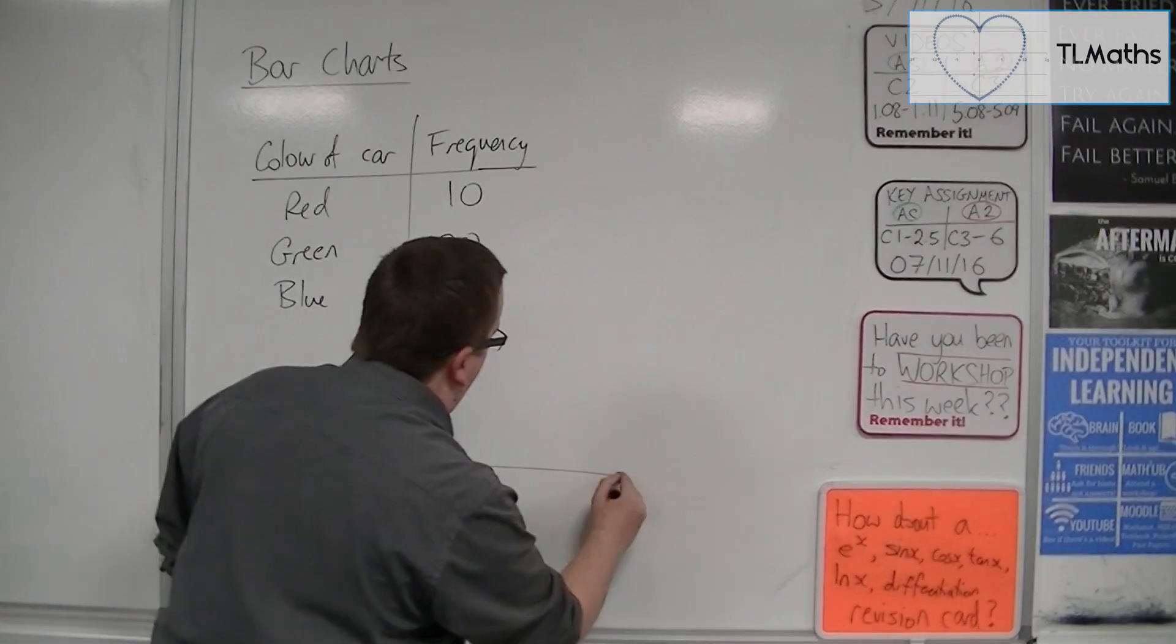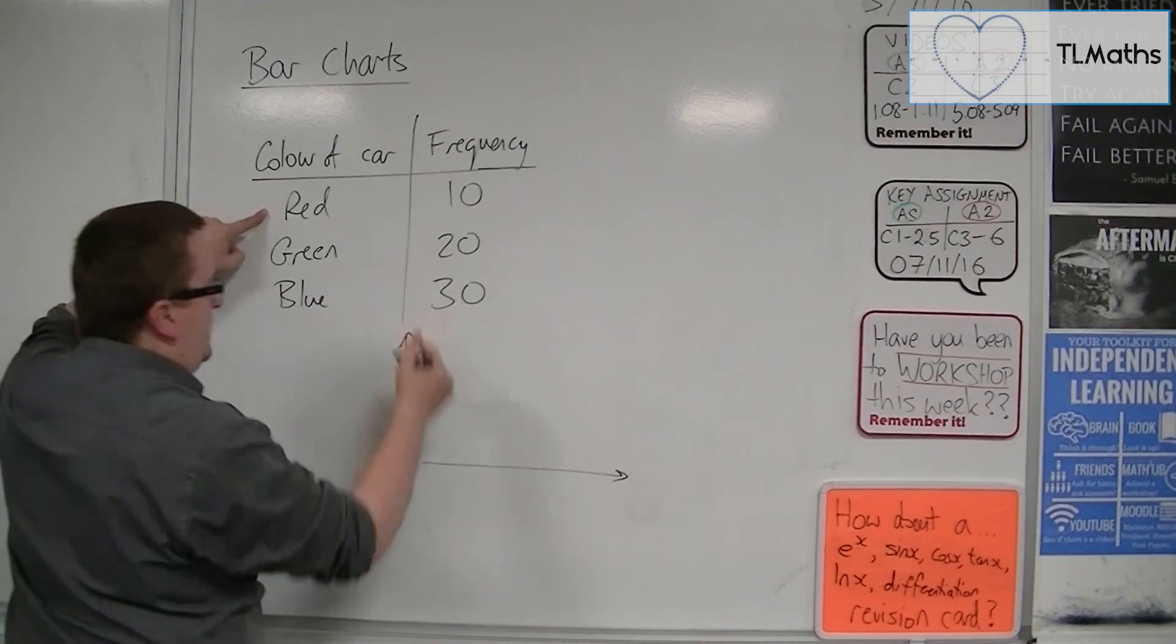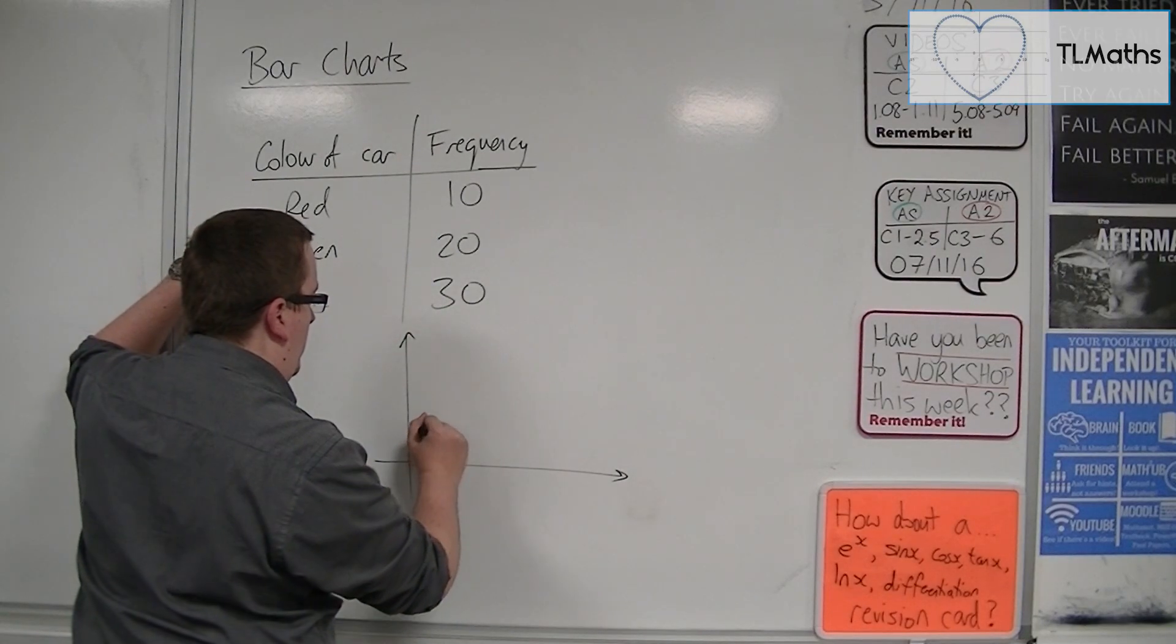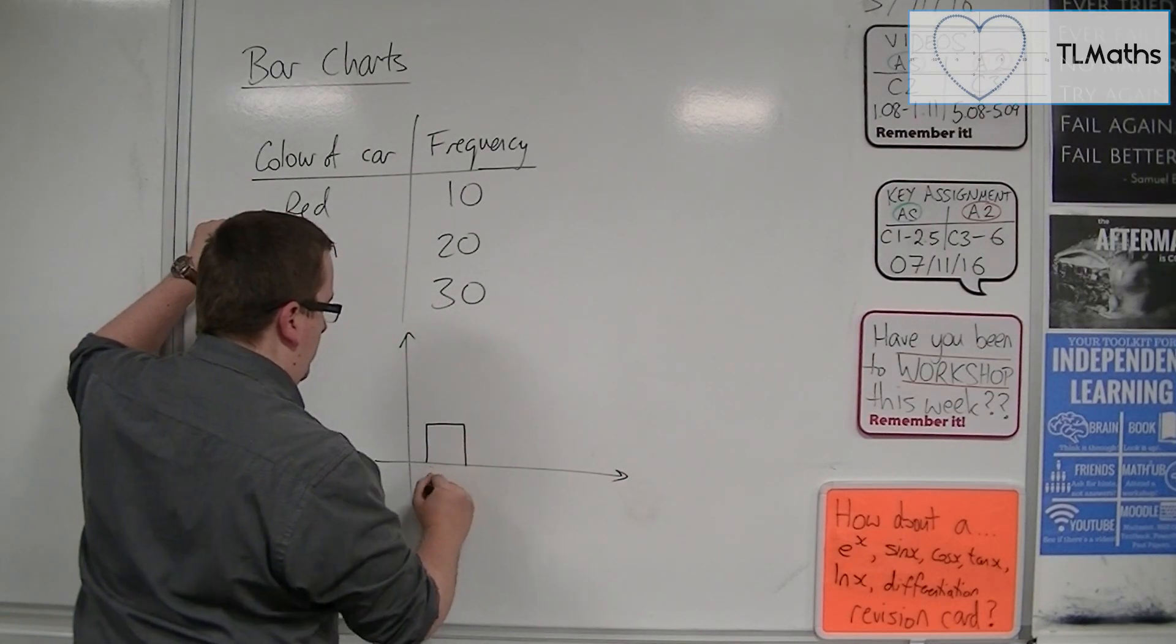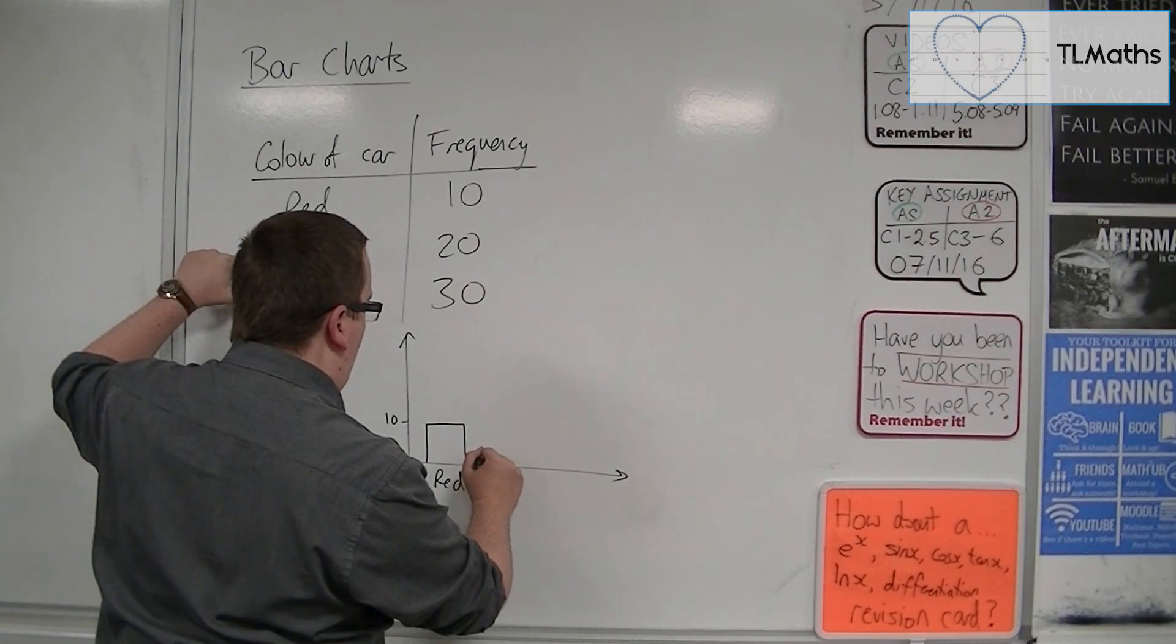And that would allow you to then draw a bar chart. So red is at 10, so I'd have to have a bar that goes up to 10 for red. And then for green, it's at 20.